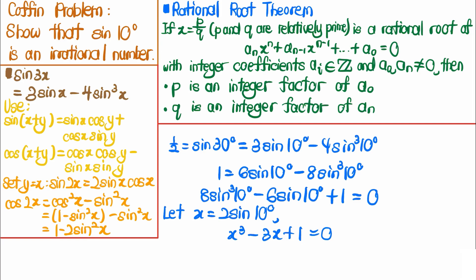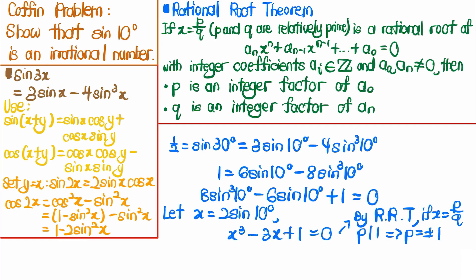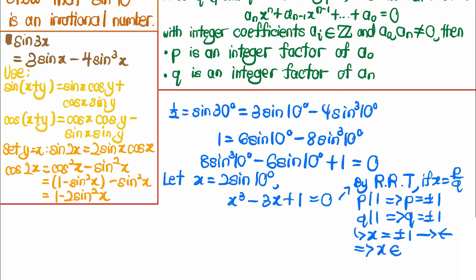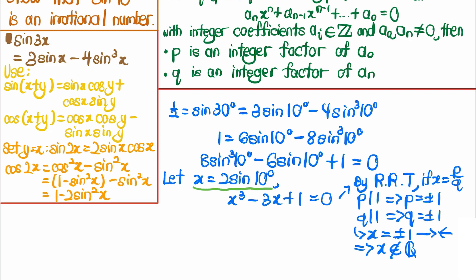If sine(10°) were rational, then x = 2·sine(10°) would be a rational root of x³ − 3x + 1 = 0. By the rational root theorem, writing x = p/q, p must divide the constant term 1 so p = ±1, and q must divide the leading coefficient 1 so q = ±1. Therefore x must equal ±1. Plugging in x = 1 or x = −1 shows neither is a solution, giving a contradiction.